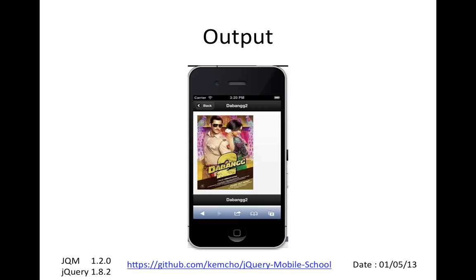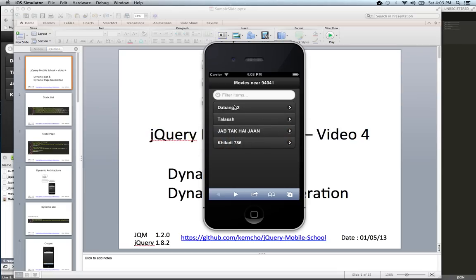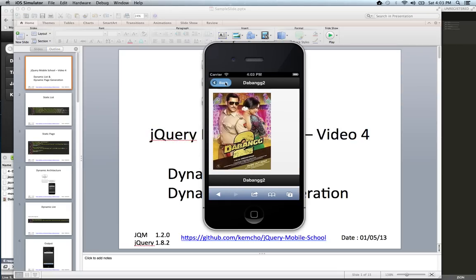So that's the output — you created a dynamic page based on the movie name and the movie picture URL, and it automatically navigates to that page. The main thing to note here is the data-url attribute, which is a dummy URL — you need it for the back button to work. It's just a placeholder, but you want to add data-url equal to some string that will allow you to go back and forth between the first page and the second page.